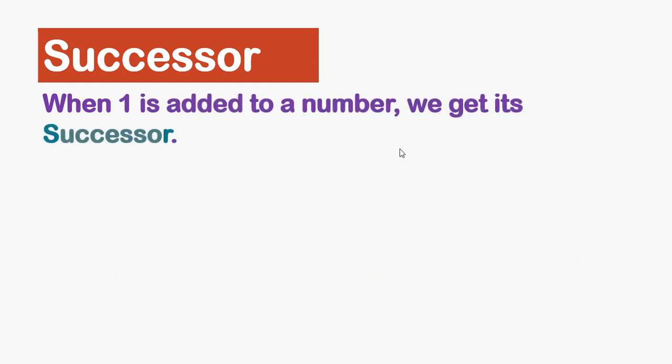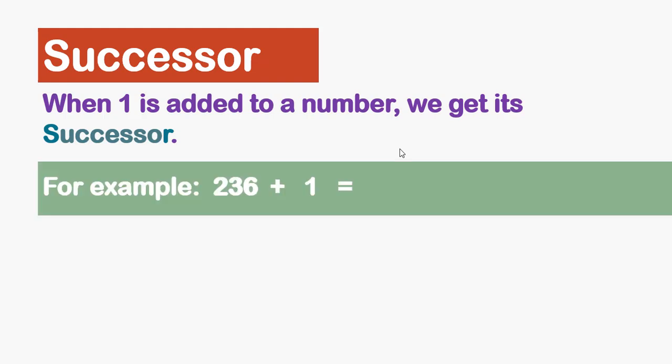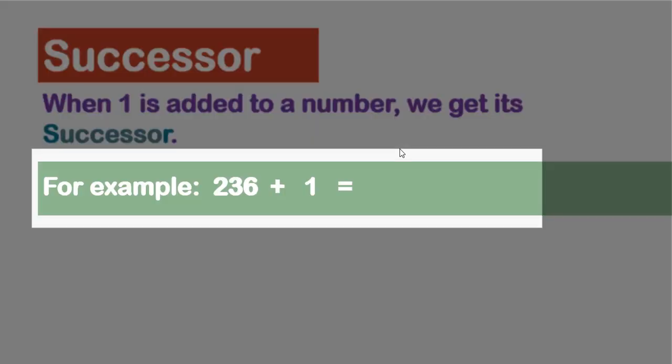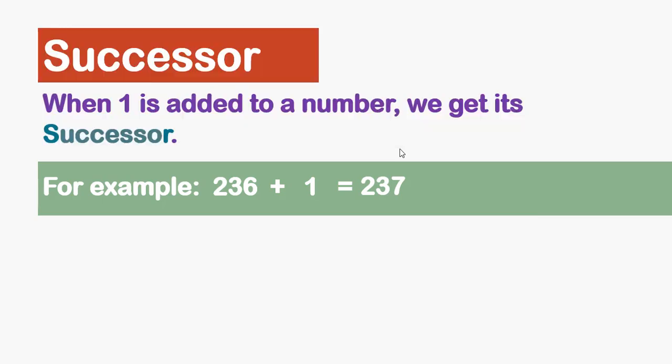For example, consider the number 236. When we add one to it, we get 237, which is the successor of 236.